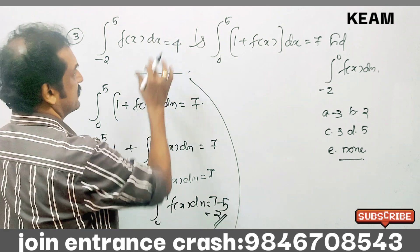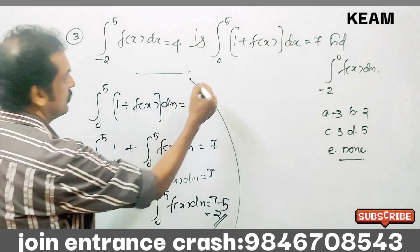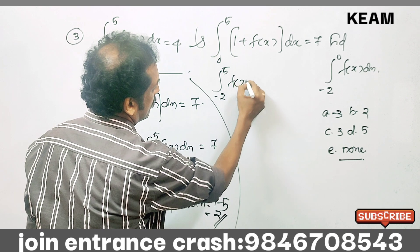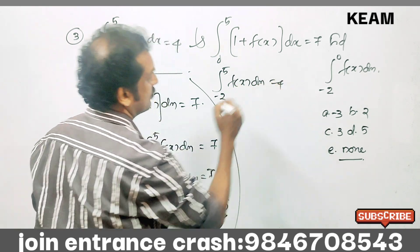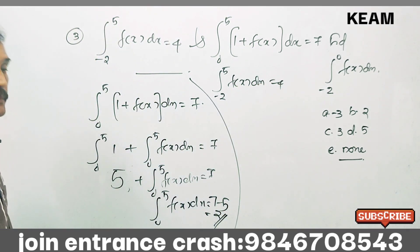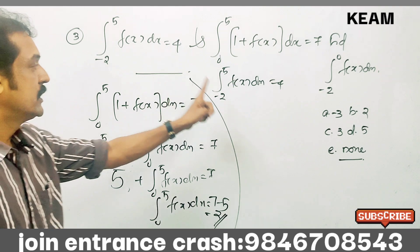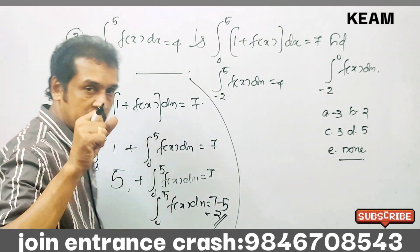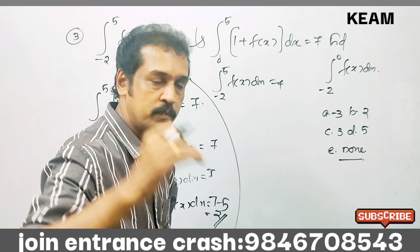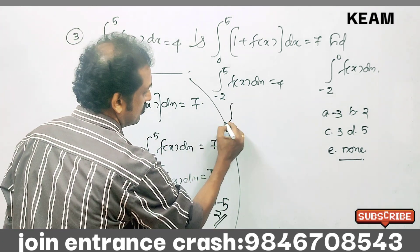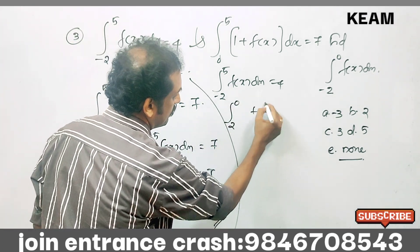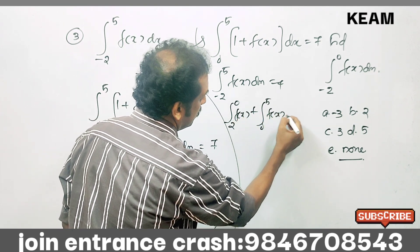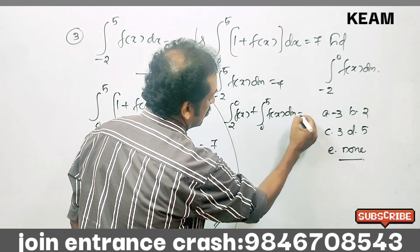Now, integral from minus 2 to 5 of f(x) dx is given to be 4. We will split the limit: minus 2 to 5 equals minus 2 to 0 plus 0 to 5. So integral minus 2 to 0 of f(x) dx plus integral 0 to 5 of f(x) dx equals 4.